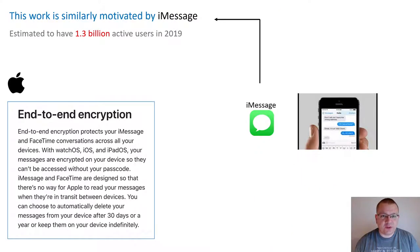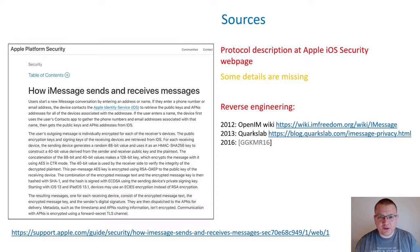This work is similarly motivated by iMessage. In 2019 it was estimated to have 1.3 billion active users, and it provides end-to-end encryption. Our analysis of iMessage is based on the protocol description available at the Apple iOS security webpage. However, some details are missing, so we also refer to prior reverse engineering efforts to fill in those gaps.